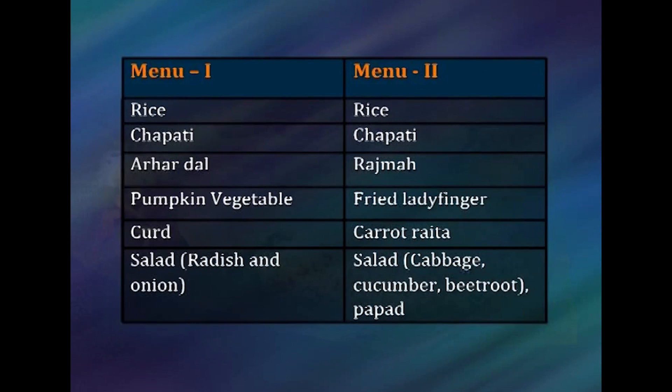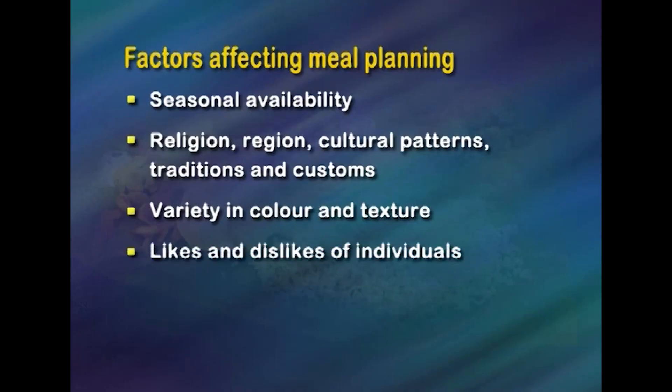Variety in color and texture: Consider the following two menus. In menu one, we include rice, chapati, arhar dal, pumpkin, and curd plus salad. In menu two, we include rice, chapati, rajma, fried lady's finger, carrot raita, and salad. The second menu has variety in terms of color, texture, flavor, and method of preparation. These factors help to make meals more appealing, attractive, and hence more acceptable.